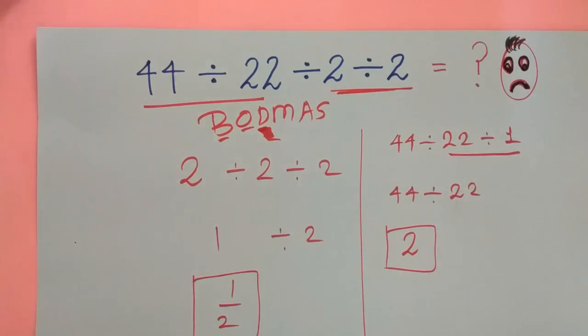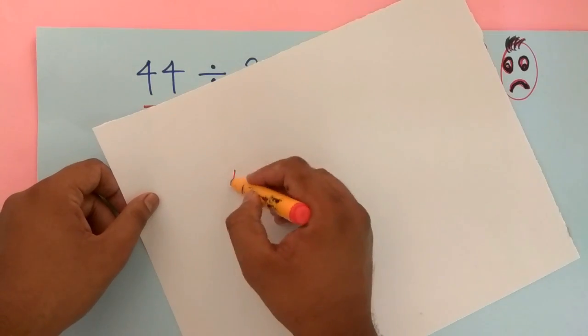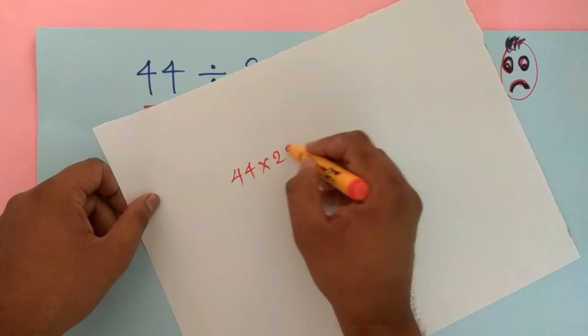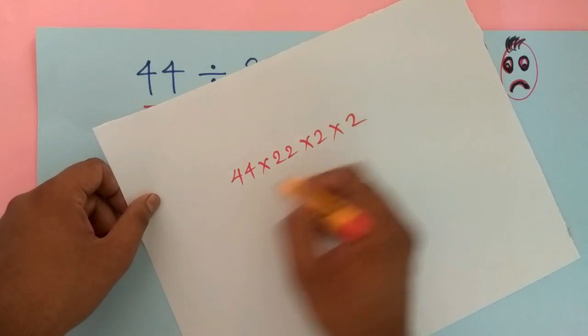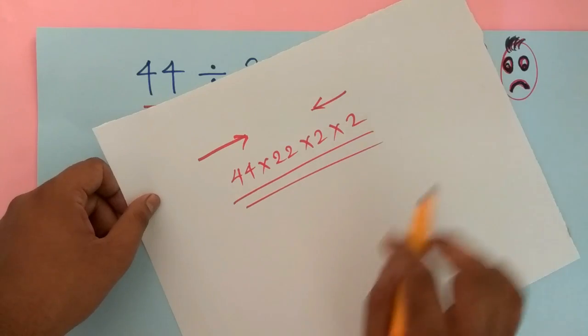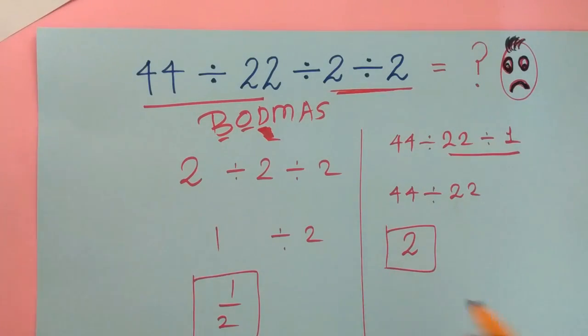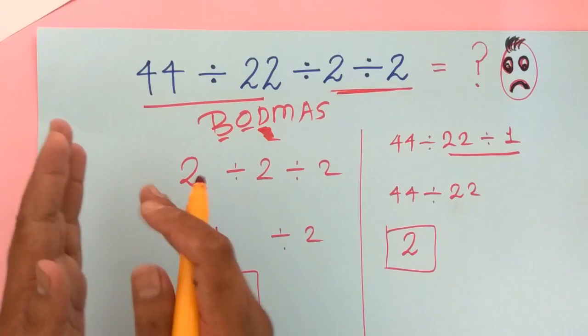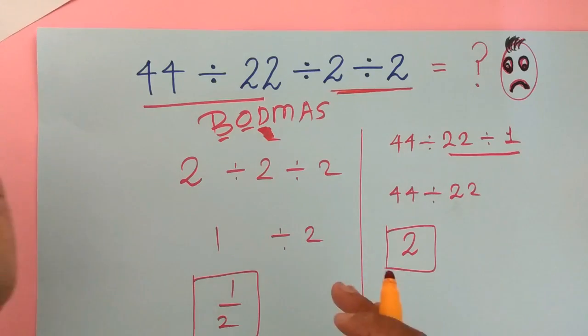multiplication. For instance, if I'm talking about multiplication 44 times 22 times 2 times 2, if you go right to left or left to right you will get the same answer. But for division there is a different case. You always have to go left to right, otherwise you will get the wrong answer. There is also one another